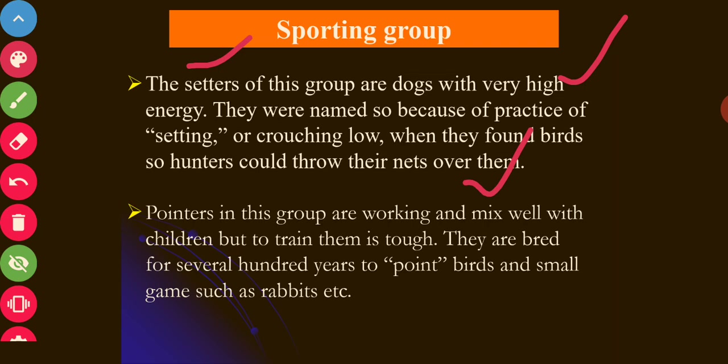Another dog in this group is the Pointer. Pointers point in the direction of game birds. They work well and mix well with children, but training them is tough. They have been bred for several hundred years to point toward birds and small game such as rabbits.